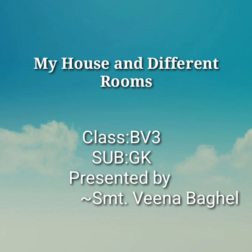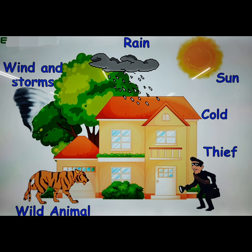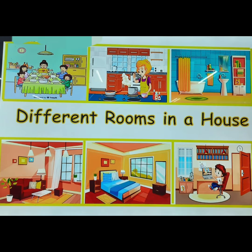Hello children, let's learn about the topic: my house and different rooms. A house is a place where we live. A house protects us from the sun's heat, cold, rain, wind and storms, wild animals and thieves. Now let's learn about different rooms in a house.